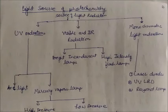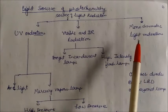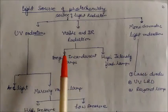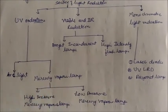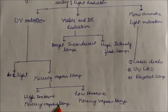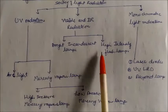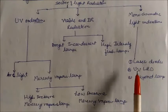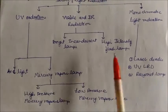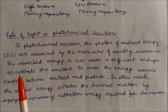In photochemistry, light is the main source. We require three types: ultraviolet, visible, and infrared radiation, plus monochromatic light. Sources for ultraviolet: arc lights and mercury vapor lamps — high pressure and low pressure types. For visible and infrared: bright incandescent lamps or high-intensity flash lamps. For monochromatic light: laser diodes, ultraviolet LEDs, and a Rayonet lamp.